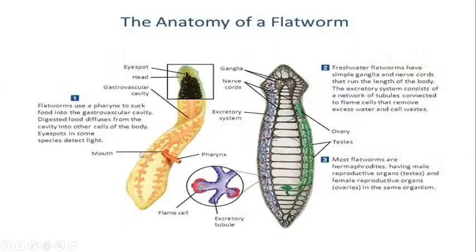Looking at the anatomy, you can see where the ovaries and testes are placed. Most flatworms are hermaphrodites, having both male and female reproductive organs in the same organism. You can also see the flame cell diagram with the excretory tubule. Notably, the mouth and pharynx are not present in the head region — they are located more centrally.